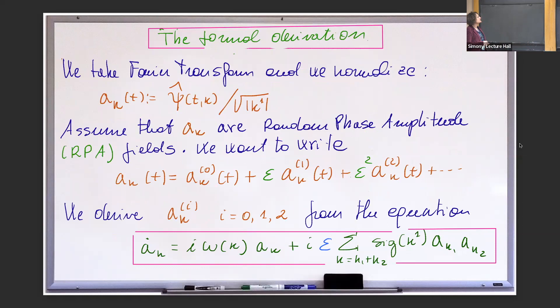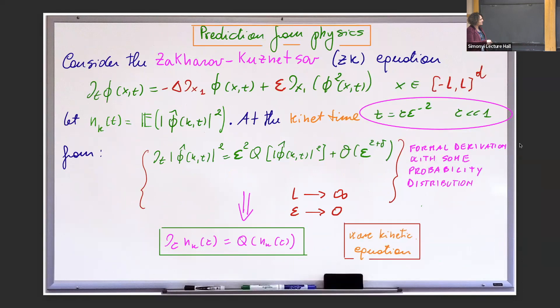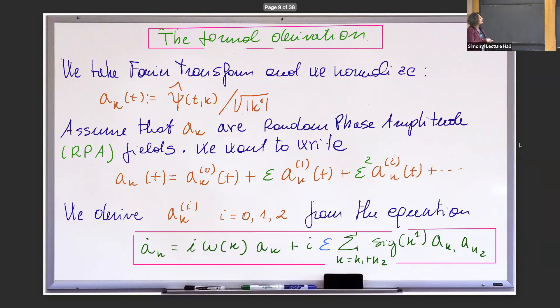Here is the formal derivation you can find in Nazarenko's book. We start with that equation, and we normalize the solution phi to get rid of the derivative in the nonlinearity. We define this Fourier coefficient a_k(t). Now, what kind of probability? Nazarenko assumes that a_k is a random phase-amplitude field. What that means is that if you think of a_k in polar coordinates — magnitude and phase — then the magnitude and the phase are independent random variables. That's what you really use in the derivation.